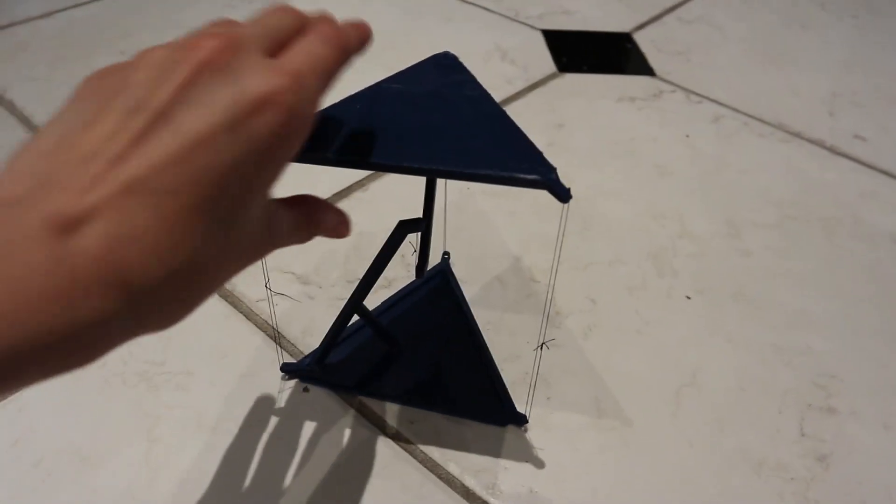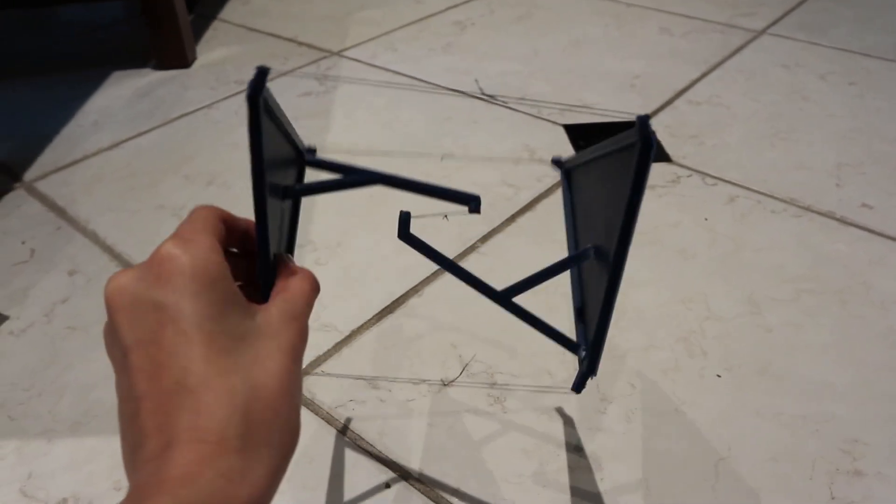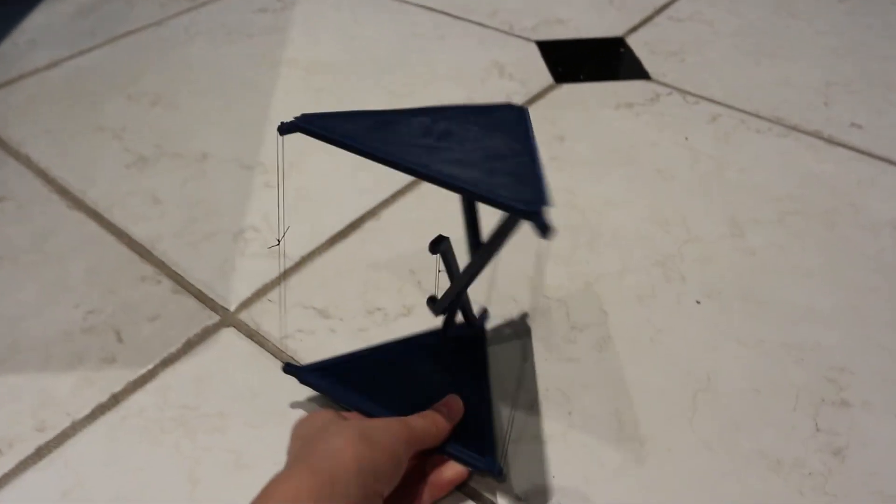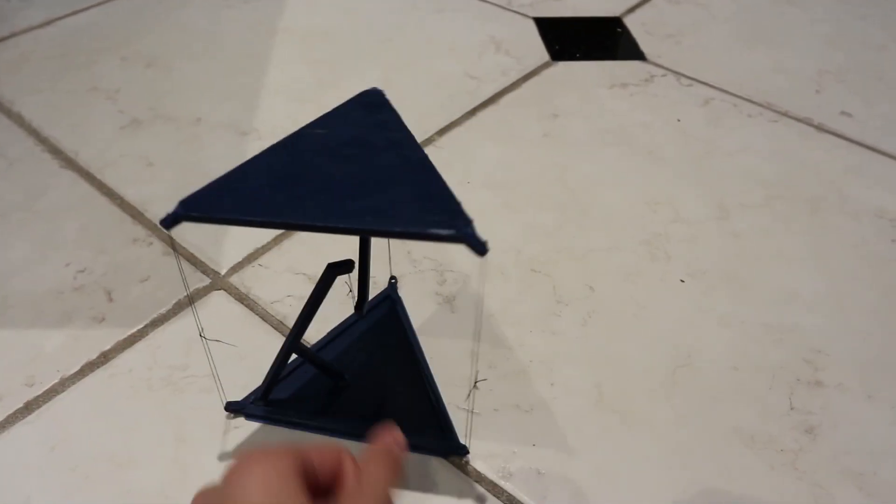So here's another experiment with this impossible table. If you hold the table like this, it looks like this. And you can flip the table around by holding only one side of it.